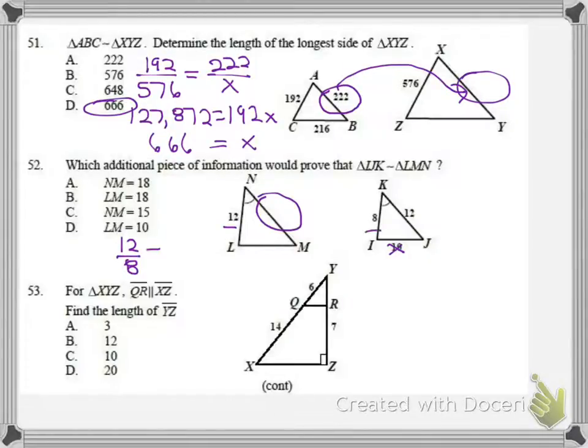Instead of X, I'll write NM. That's really what we're looking for. I get 144 equals 8 times NM. Then I can divide 144 by 8 and I get 18 for NM. If I had 18 for NM, it would be side-angle-side similarity.